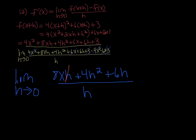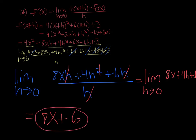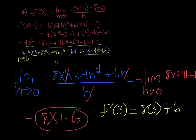Divide out an h with everybody, and that is the limit as h approaches 0 of 8x plus 4h plus 6. If you put 0 in for h, what you're left with is 8x plus 6. So that's the derivative. From there, they want the slope of the tangent line — the derivative gives you the slope of the tangent line — and specifically at x equals 3. Plug 3 in: 8 times 3 plus 6 equals 30. So 30 is the actual answer.